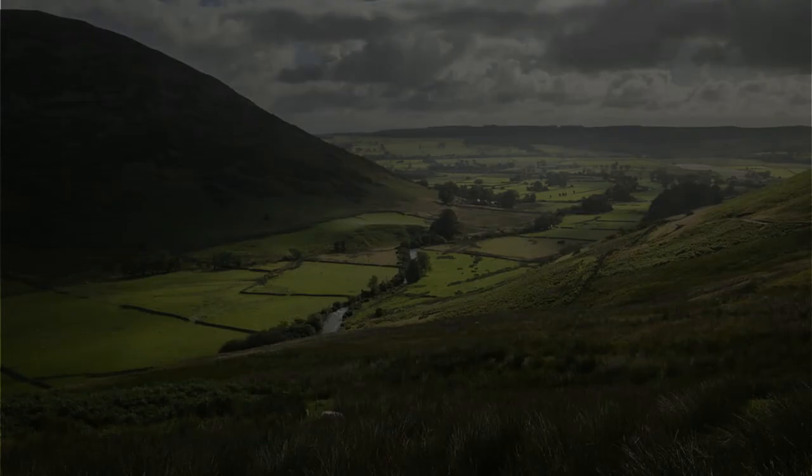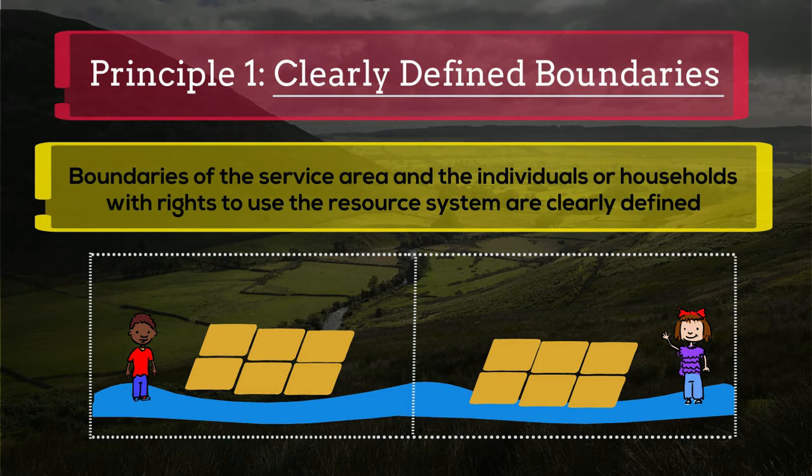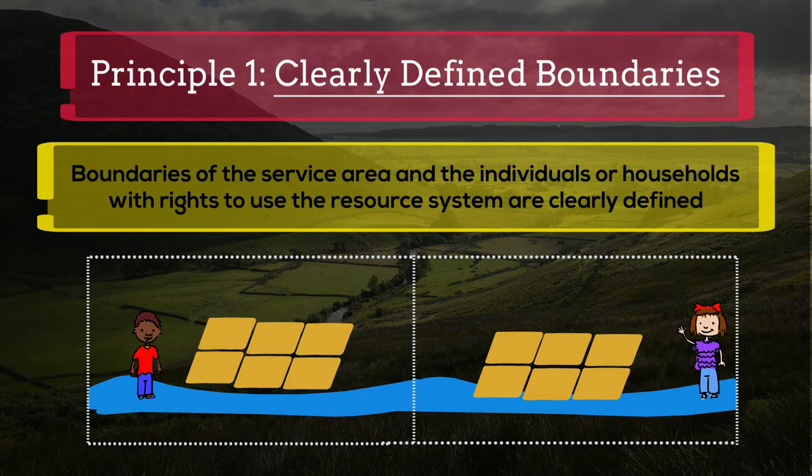Principle 1: Clearly defined boundaries. When the boundaries of the resource area, who is allowed to use it, and how much, are clearly defined, it is easier for communities to know what they are managing and for whom. Clearly defined boundaries also allow communities to know who lies inside or outside the system, and therefore who must contribute towards its maintenance and who must be excluded from deriving benefits from it.